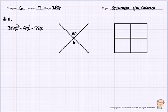Good morning. Chapter 6, Lesson 7 is on page 284. We're going to be doing general factoring, which is kind of an accumulation of chapters 6, lessons 3, 4, 5, and 6. Kind of throw in a little bit of everything.